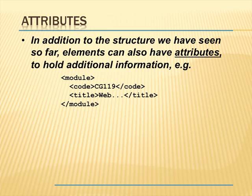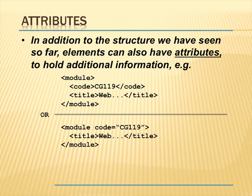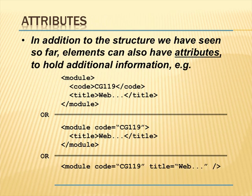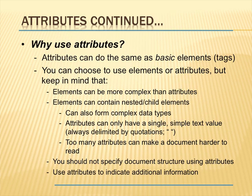In addition to elements which hold data, elements can also have attributes to hold additional information. For example, we could express that top version in a lower form — instead of giving a separate element for 'code', we could make it an attribute of 'module' instead, saying 'code equals'. In actual fact we could make all of them attributes instead of elements. And there are certain advantages to that, although there are a lot more disadvantages. Attributes can do the same thing as basic elements.